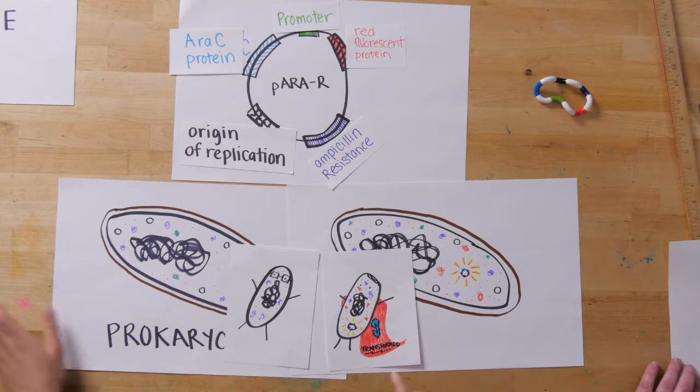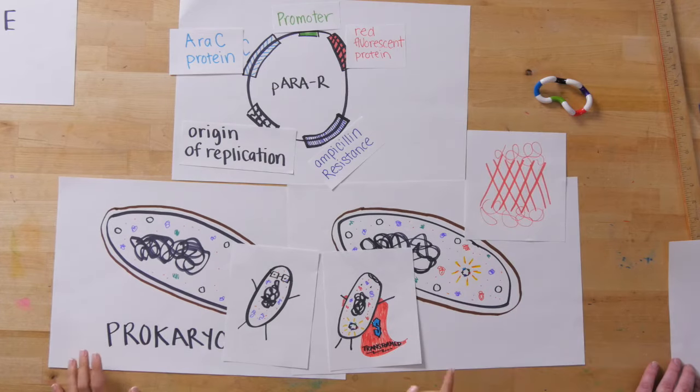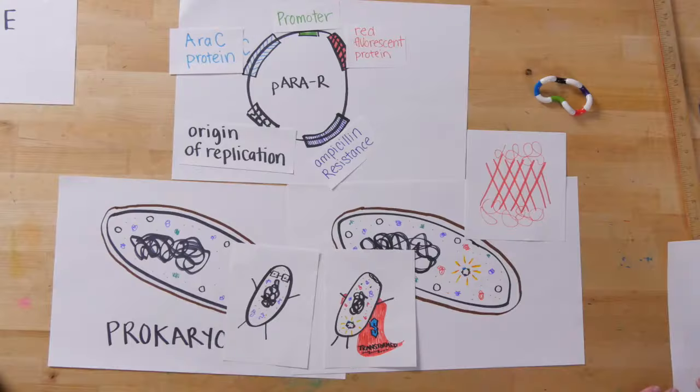So our regular bacteria is now a super bacteria. It's making all kinds of protein products. One of the protein products we're interested in is this RFP, that red fluorescent protein. But is that the only superpower it has? Maybe it has a few more superpowers.